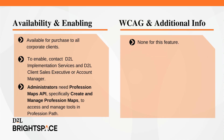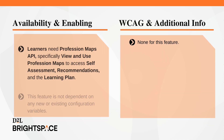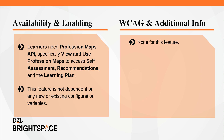This feature is available for purchase to all corporate clients. To enable the functionality, engage with D2L implementation services to set up and deploy the tool for your organization. Contact your D2L client sales executive or account manager to explore more options and requirements. Administrators need Profession Maps API — specifically Create and Manage Profession Maps — to access and manage tools in ProfessionPath. Learners need Profession Maps API — specifically View and Use Profession Maps — to access self-assessment, recommendations, and the learning plan. This feature is not dependent on any new or existing configuration variables.